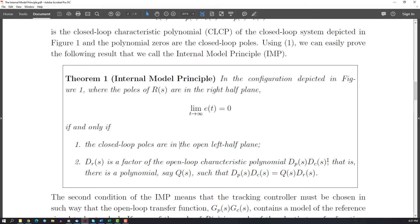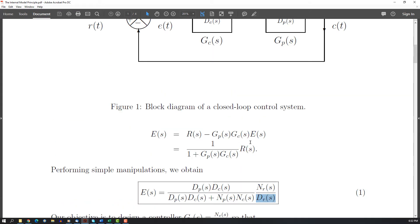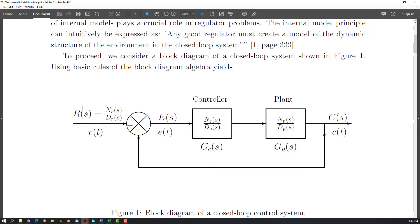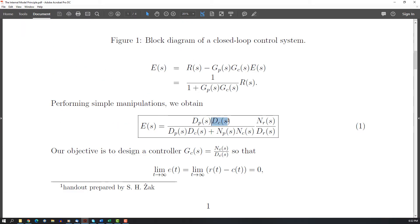The poles of the plant with the poles of the controller have to be cancelled. So normally, the poles of your plant will not contain the poles of your reference, so as a result...